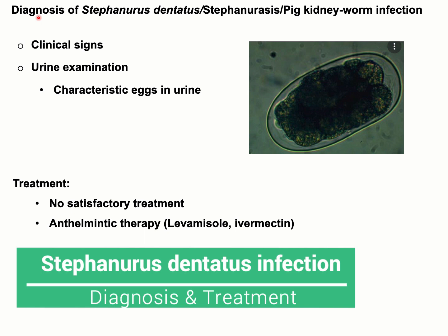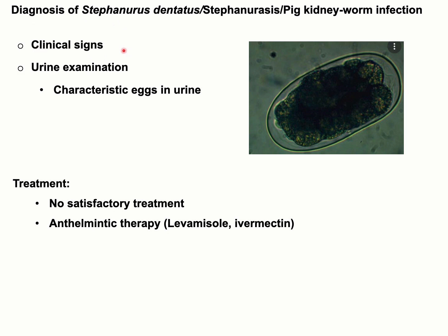For diagnosis of Stefanurus dentatus infection or stefanuriasis: initially check the clinical signs. For confirmatory diagnosis, perform urine examination — collect urine from the pig, centrifuge it, take a drop of the sediment, place it on a slide, and examine under a microscope. For treatment, there is no fully satisfactory treatment for stefanuriasis, but anthelmintic therapy can be given. Levamisole and ivermectin are good choices of drug for treatment of this disease.